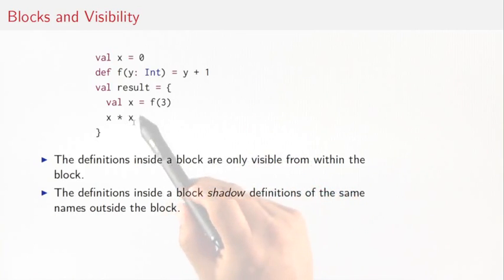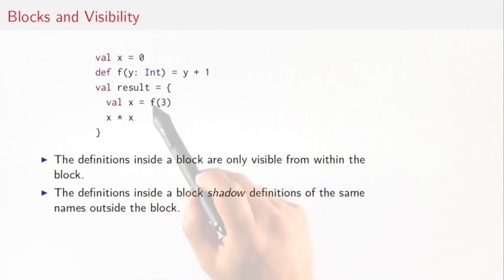So that means that, for instance, here the name f is visible in the block. It refers to this outer block name f. But the name x here refers to the inner name x, not the outer name x. The inner name x shadows the occurrence of the outer name.